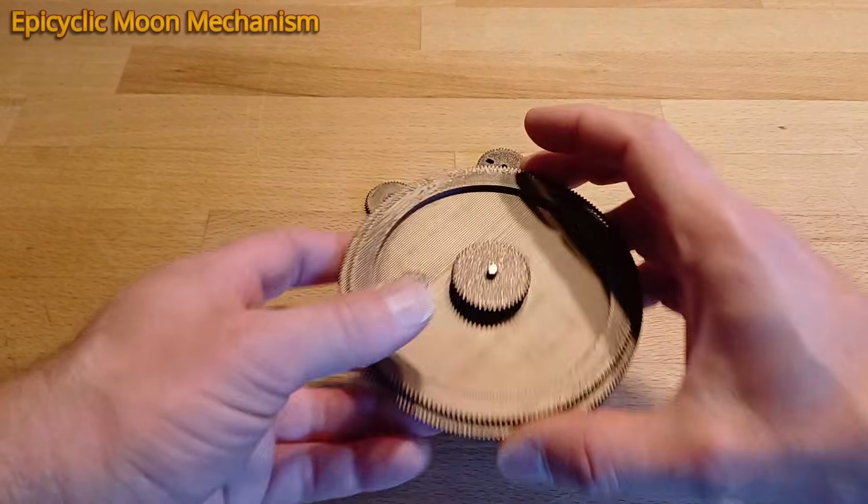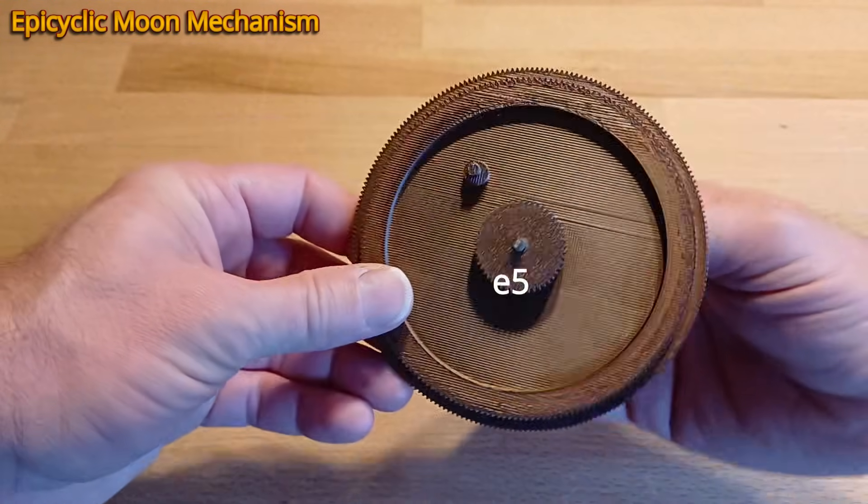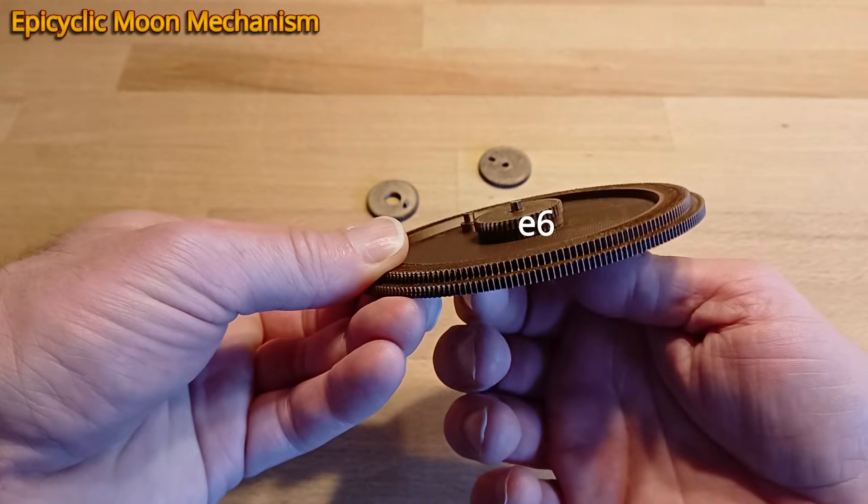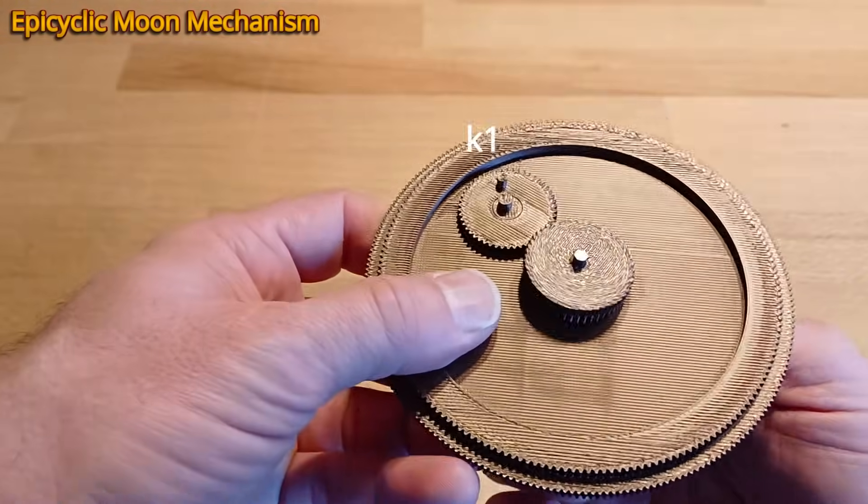The epicyclic moon mechanism on wheel E3 is quite interesting. Here wheels E5 and E6 are slightly different in size. E5 engages with K1, which has a pin.